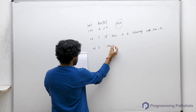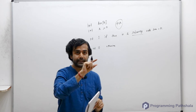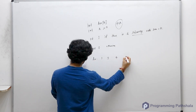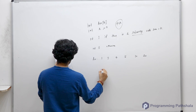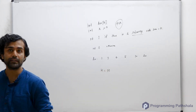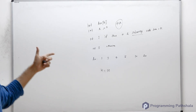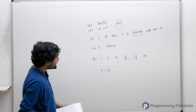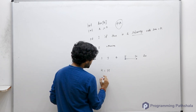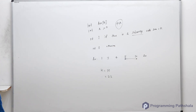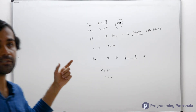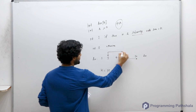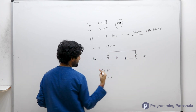A subarray is a continuous chunk of elements. For example, if the array is [1, 3, 4, 5, 10, 20] and k = 15, you should return true — because the subarray [5, 10] has sum 15. For k = 22, the answer is also true: the subarray from element 3 to element 10 gives 3+4+5+10 = 22.